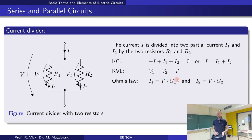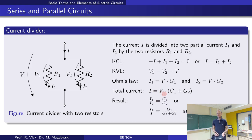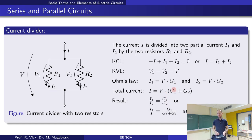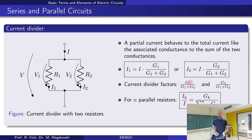We write Kirchhoff's current law (total current is the sum of individual currents), Kirchhoff's voltage law (voltages are equal in parallel), and Ohm's law using conductance G — remember G equals one over R. We then take the ratio of the partial current to the total current; the voltages cancel, and we get that the ratio of a partial current to the total current equals the ratio of the partial conductance to the total conductance.